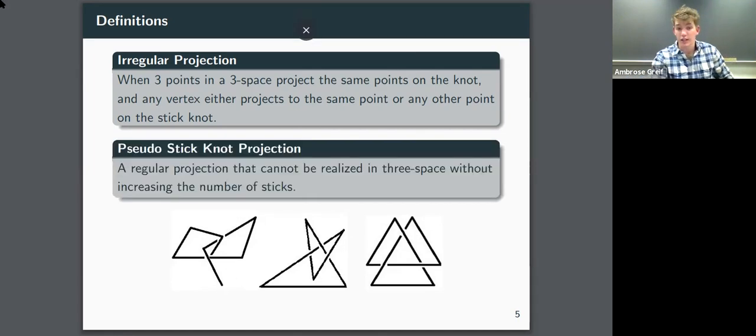And finally, a really important type of projection that we studied was called a pseudo-stick knot projection, which is a regular projection that cannot be realized in three space without increasing the number of sticks. So this image in the center is actually a pseudo-stick knot projection. And while you might think, well it's connected and it looks like it would be possible, I mean nothing's bent, what you'd find if you actually try to construct this in three dimensions is that it would be impossible without breaking one of those lines. This image is an illusion, much like the works of M.C. Escher, such as his simultaneously ascending and descending staircase, which looks viable on paper, but it's obviously impossible in the real world.